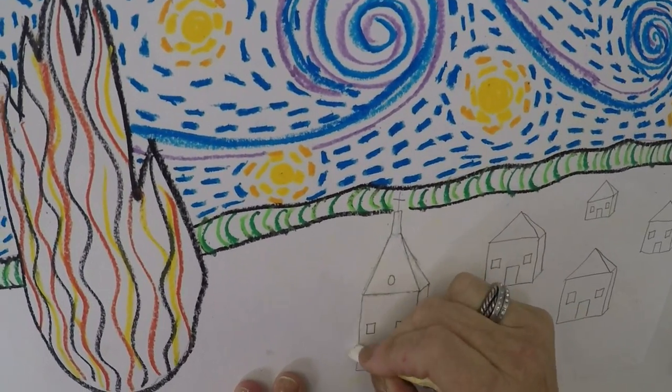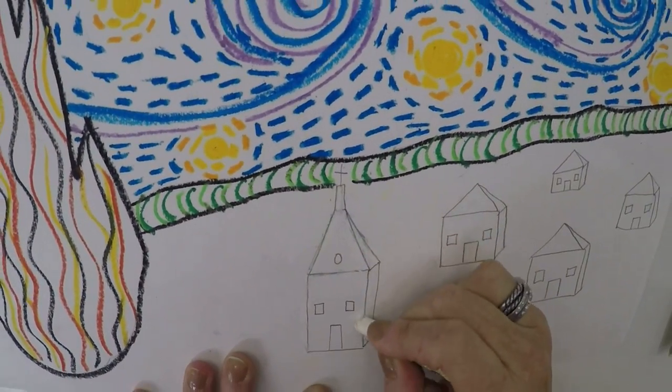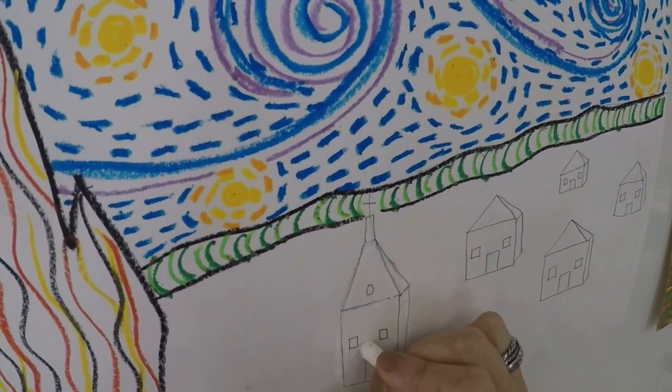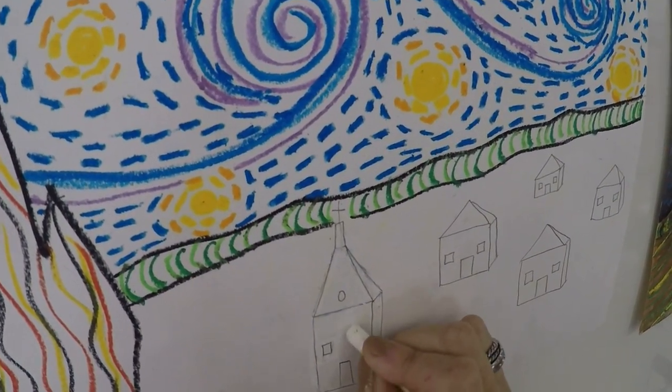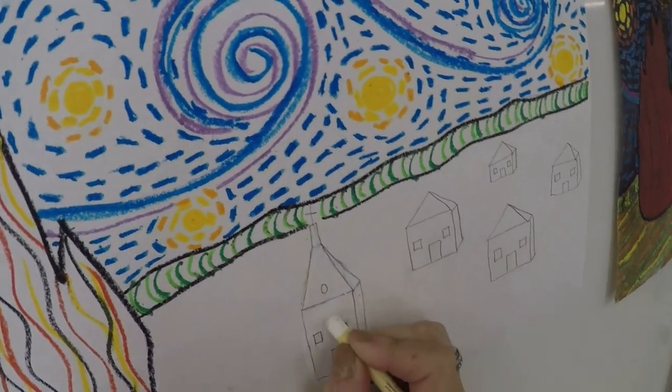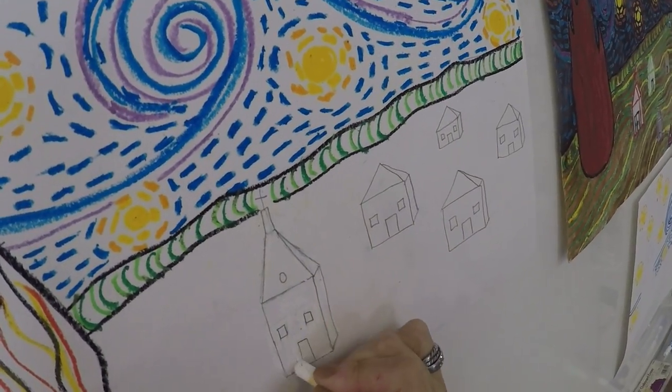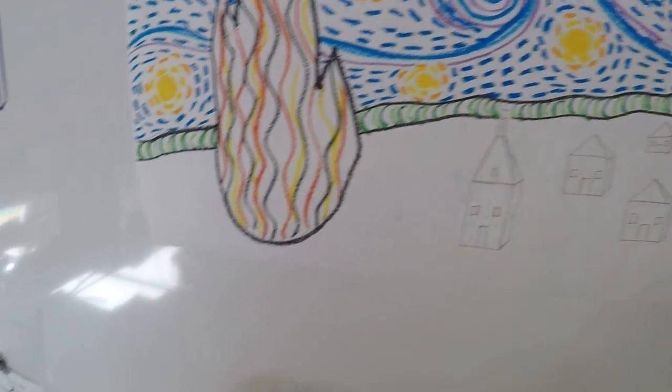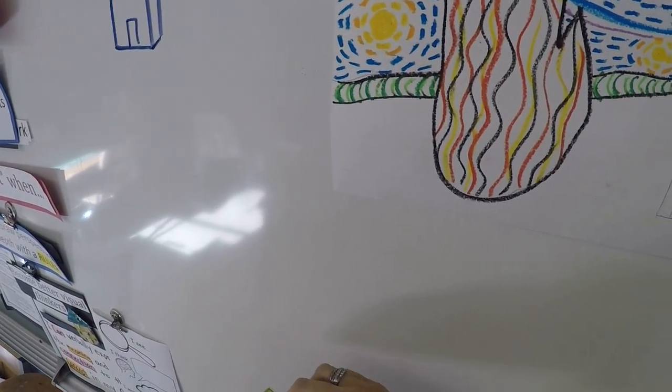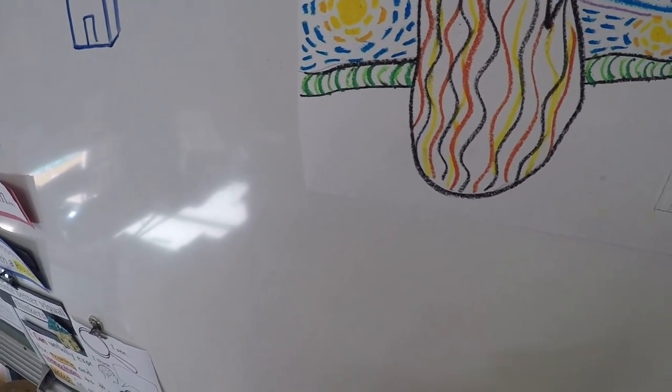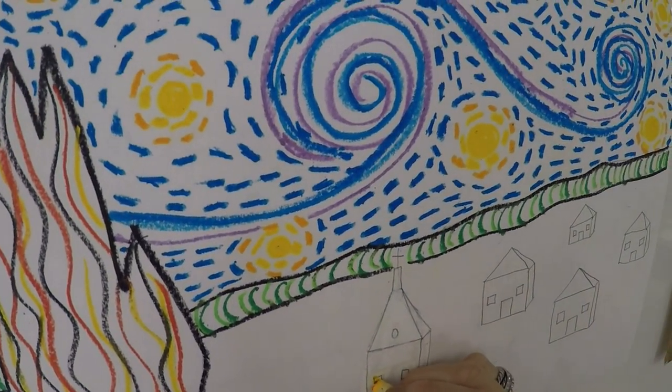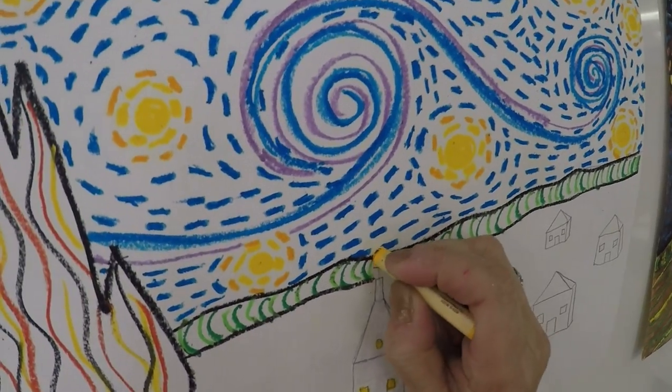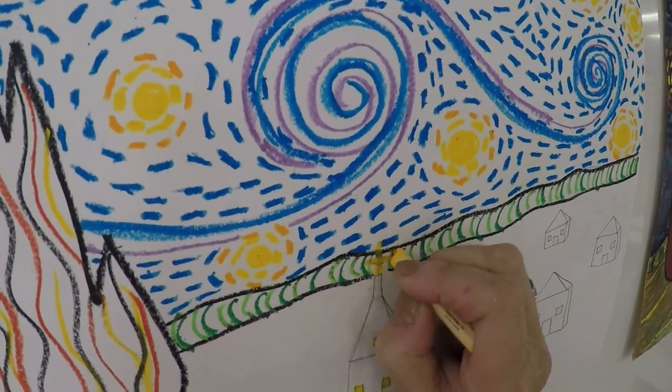I'm just going to outline white. I'm going to do my cross in yellow. Make sure you get that white nice and thick in there. I'm going to go around the windows and actually I may just fill it in all white. I am going to take my yellow and do the windows and the door because the door is open and my cross at the top.